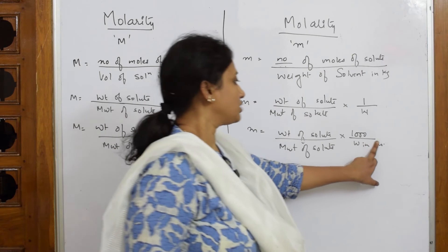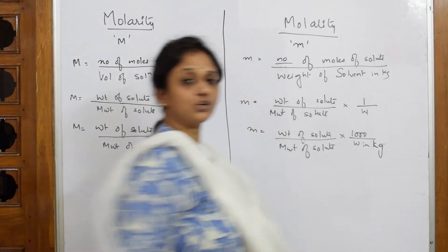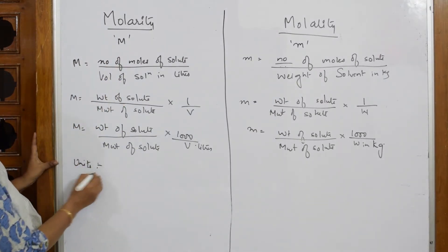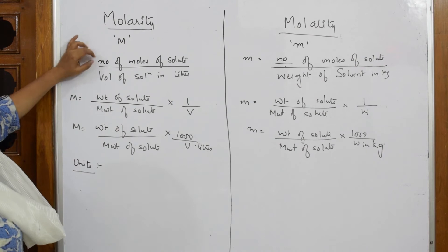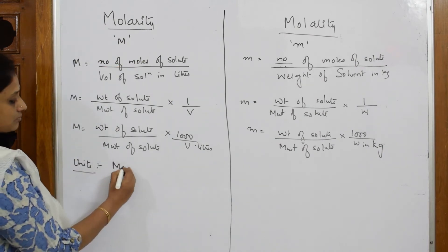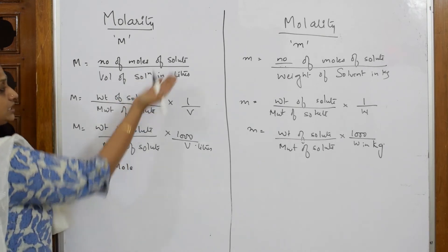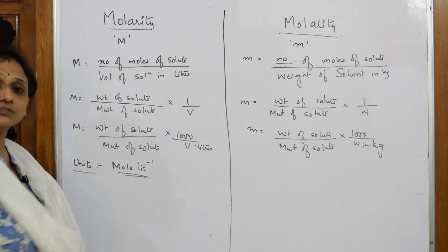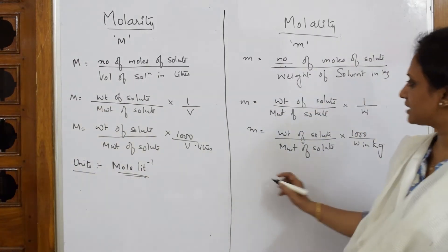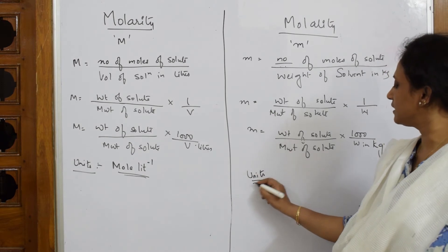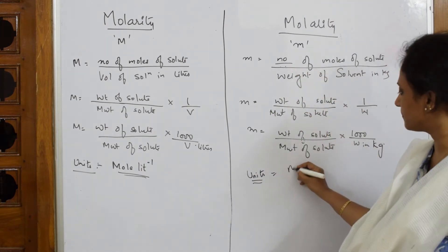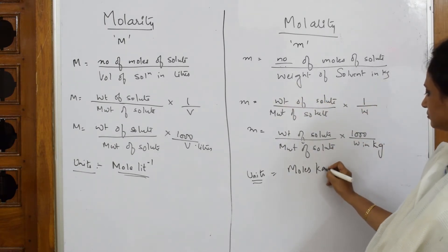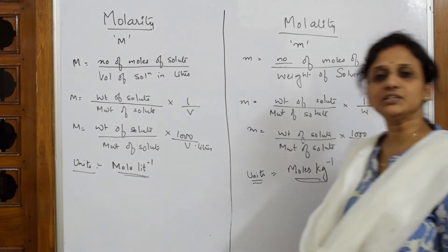The weight of solvent is in kg — so it is 1000 over weight of solvent in kg. Now let us write the units. For molarity: number of moles divided by volume in liters gives mole per liter, so the unit is litre inverse. For molality: number of moles divided by weight of solvent in kg gives the unit kg inverse.